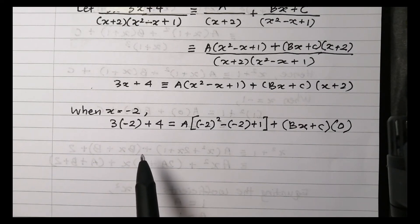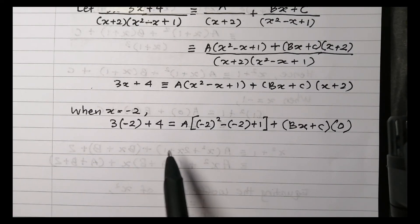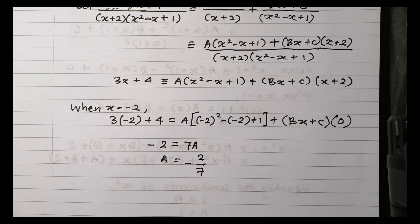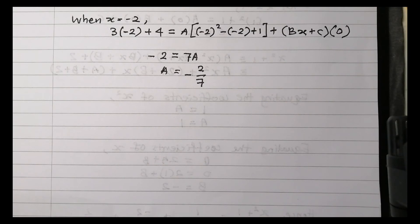Then find the value of A. A equals negative 2 over 7. To find B and C, we are going to equate the coefficients.